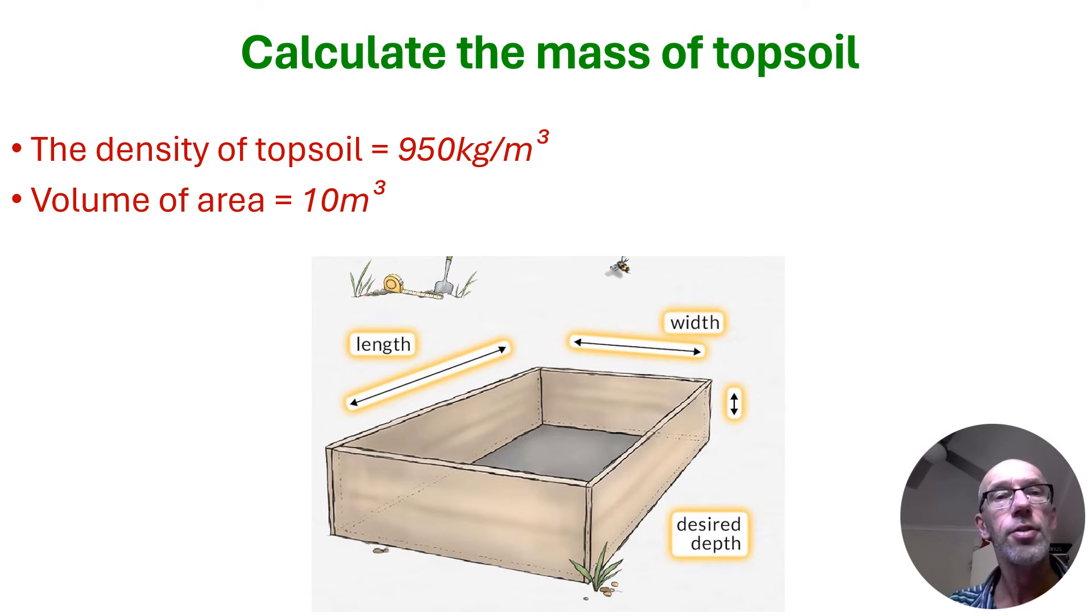Okay, let's go to our second variation of the density pyramid. This time we're trying to work out the mass of some soil that we're going to buy for a garden bed. We've done a bit of Googling and we've worked out that the density of topsoil is 950 kilograms per meter cubed. We've measured up our length, width, and height of our garden bed. And we've determined that our volume is 10 meters cubed.